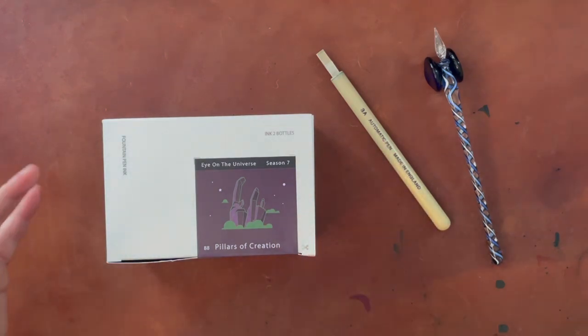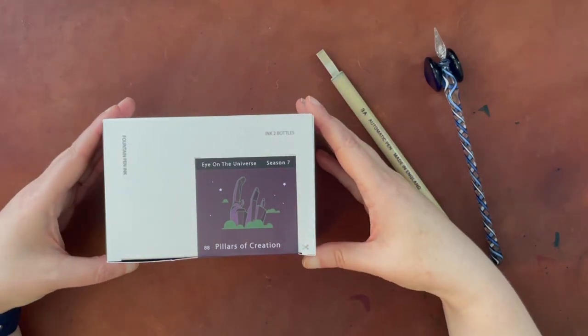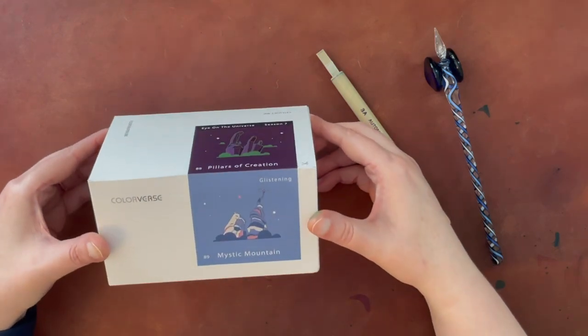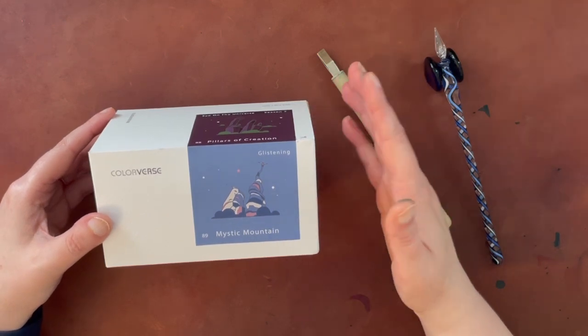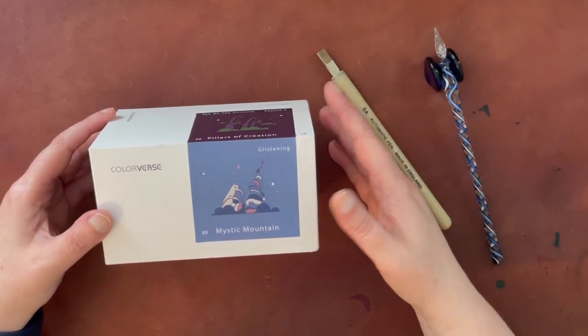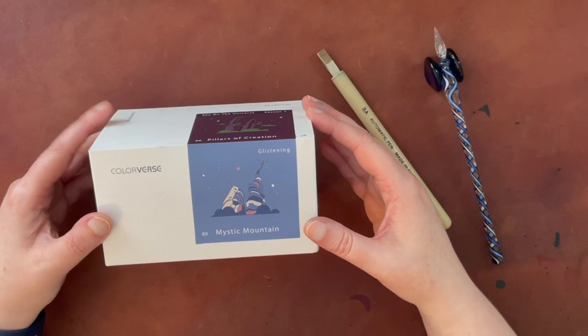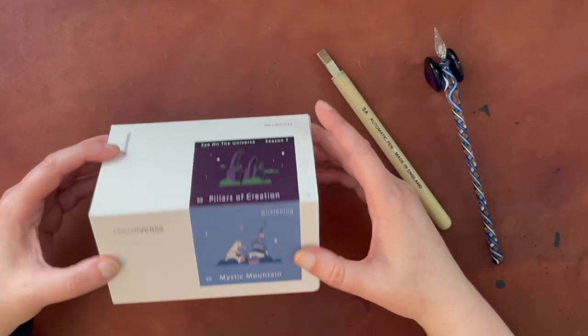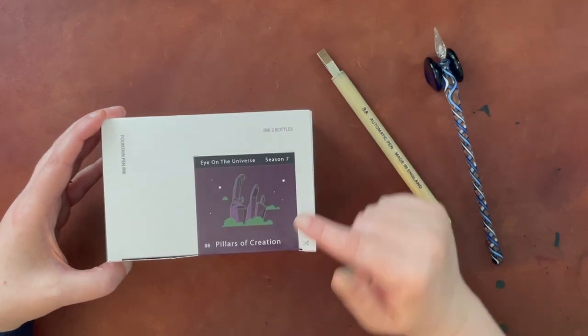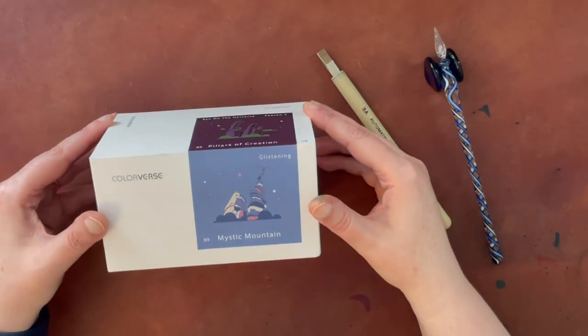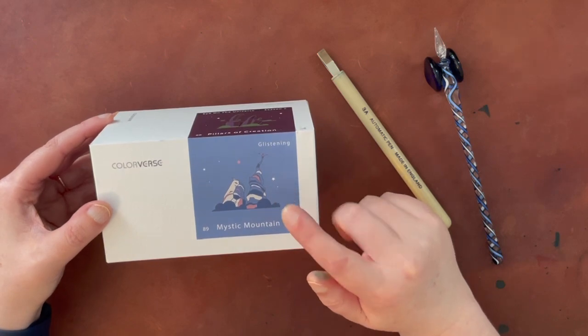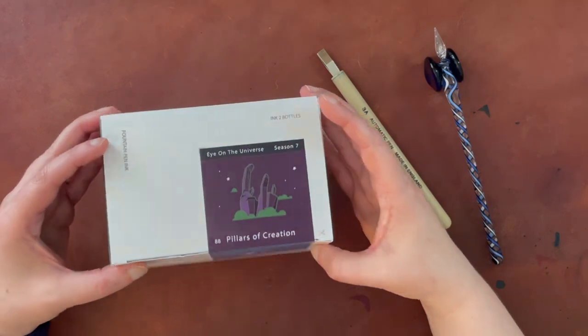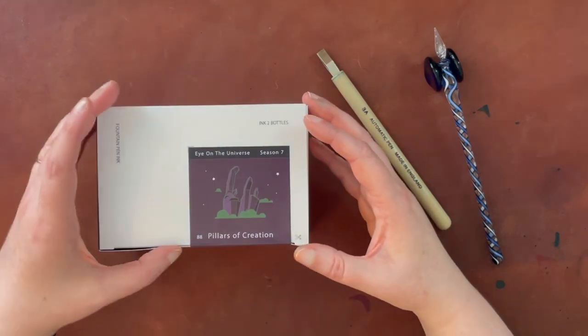So you may be able to recognize from the box that this is part of the Colorverse Eyes on the Universe Season 7 collection. I was very tempted to get a variety of inks in this new collection because they're all very pretty, but I opted to go for the one that has Pillars of Creation, which is number 88, and Mystic Mountain. The Mystic Mountain is what they call a glistening ink, which is really just a sparkling or shimmer ink.